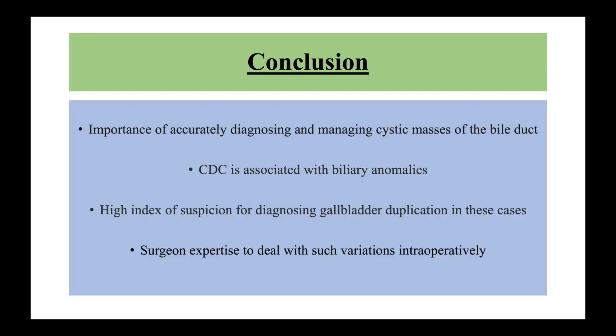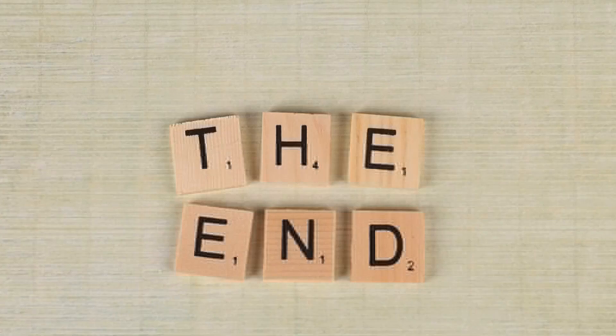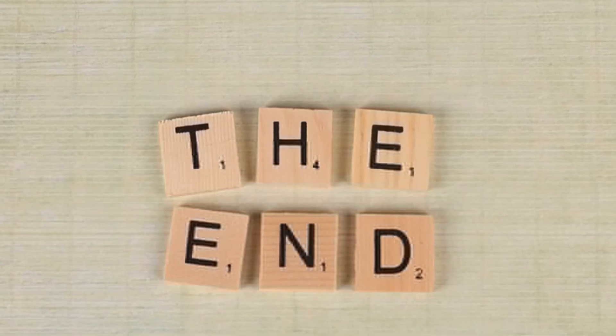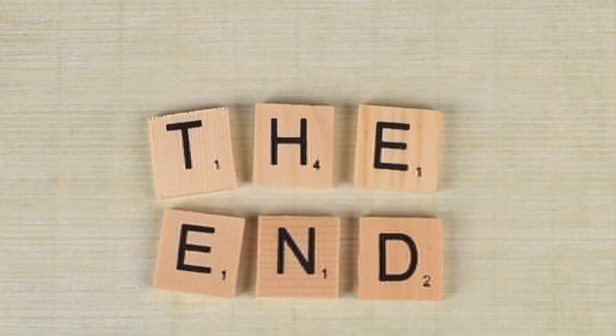What we learned from this case is the importance of querying, diagnosing, and managing cystic masses of the bile duct and associated anomalies, with a high suspicion for gallbladder duplications intraoperatively and dealing with them if you encounter them as a surprise during surgery. Thank you so much. Subscribe to the channel and we will be coming with more interesting cases in the future.